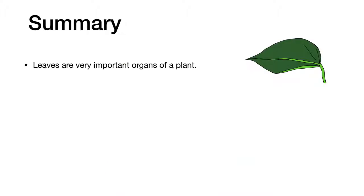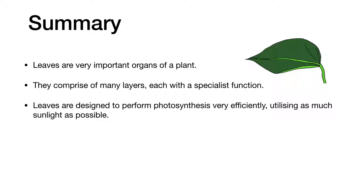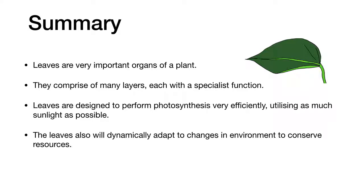So in summary, leaves are very important organs of a plant. They comprise of many layers, each with a specialist function. Leaves are designed to perform photosynthesis very efficiently, utilizing as much sunlight as possible. The leaves also will dynamically adapt to changes in the environment to conserve resources.